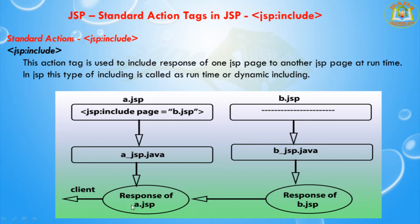This type of including in JSP is called runtime or dynamic including — we are not including at static time, we are including at runtime. Internally, a separate servlet will be created for both the source and the destination pages, and the response of the destination servlet will be included into the source servlet, then the final response will be sent to the client.